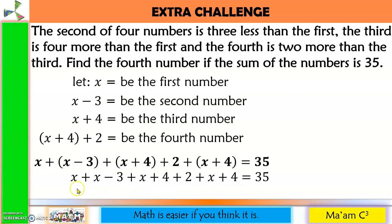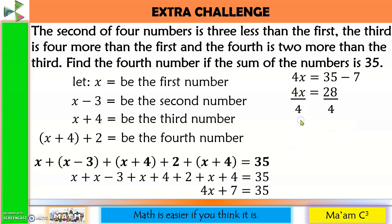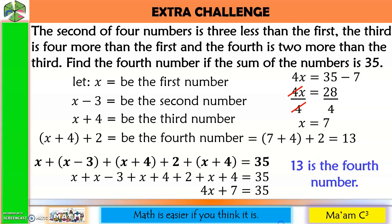Remove parentheses and combine like terms: 4X plus (negative 3 plus 4 plus 2 plus 4) equals 4X plus 7 equals 35. Move 7 to the other side: 35 minus 7 is 28. Divide both sides by 4: X equals 7 (the first number). We need the fourth number: (7 plus 4) plus 2 equals 11 plus 2 equals 13. Therefore, 13 is the fourth number.